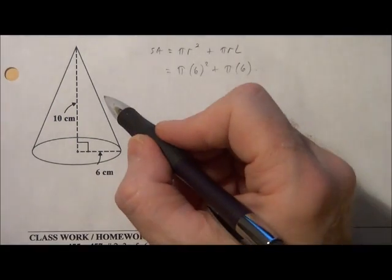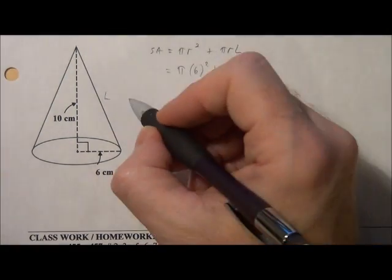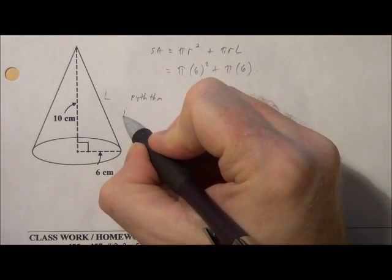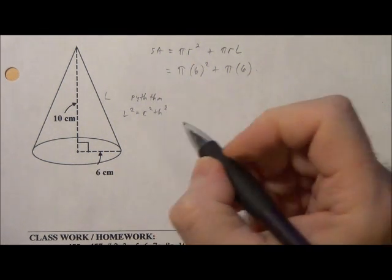Well, we don't know l because l is the longest side there. So we're going to have to use Pythagorean theorem again. So l squared equals r squared plus h squared, radius and height in this case.